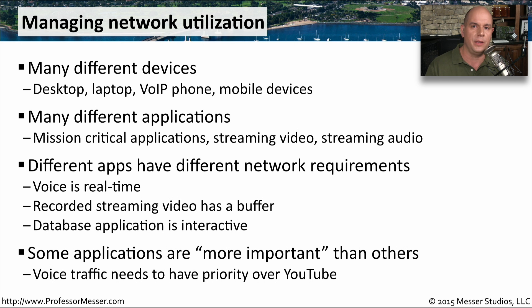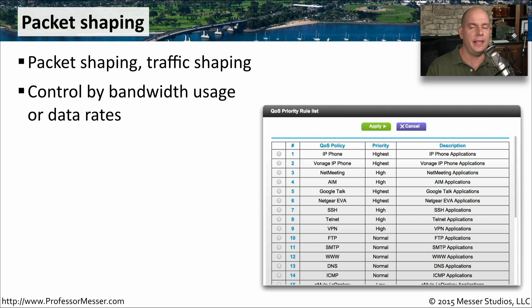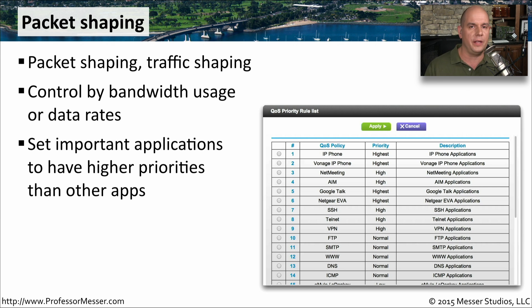To do that, we use something called Quality of Service. This QoS functionality is provided through devices called packet shapers or traffic shapers. These are devices that allow us to take the application in use and limit the data rates or bandwidths that those applications are going to use. This allows us to set a higher priority for something like Voice over IP and put streaming media at a lower priority.